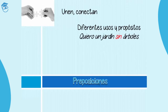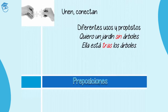Te muestro un ejemplo. Es diferente decir quiero un jardín sin árboles — I want a garden without trees — then say ella está tras los árboles — she is behind the trees. So, as you can see, the use of the prepositions according to your intention can be multiple, different kinds, using in this case sin — without — or tras — behind.